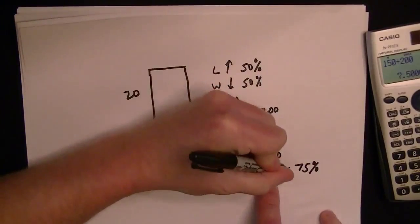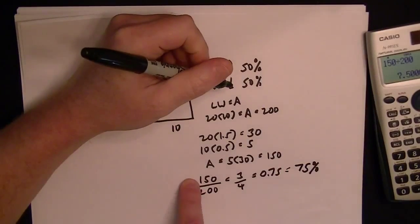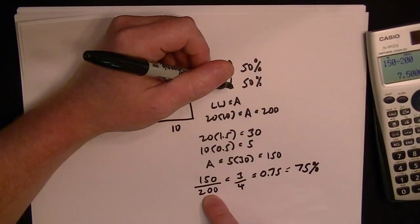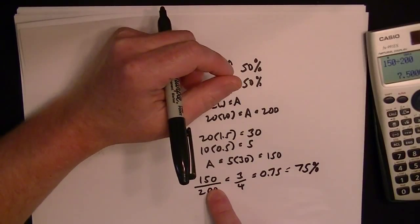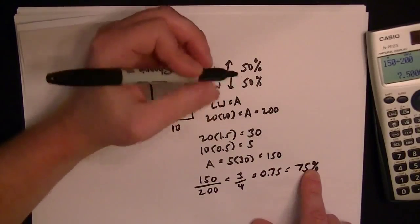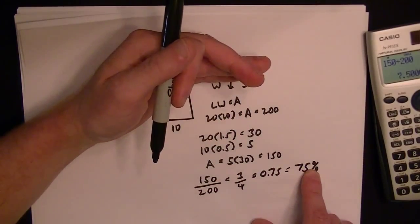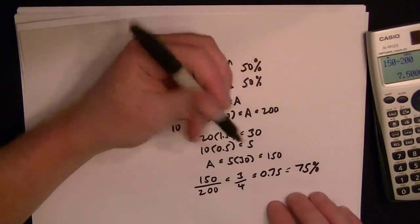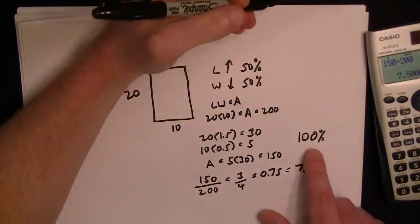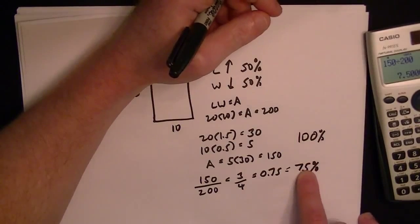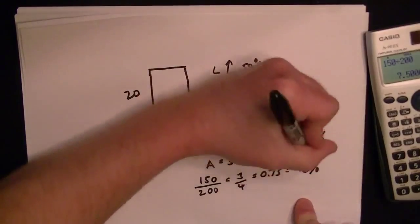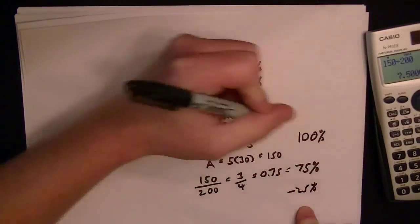This is basically saying the new garden is 75% the size of the old garden. In other words, the new garden has 25% less area than the old garden. 75% of the original size is 25% lower than the original because the original size is what we're comparing it to. It's 100%, but it dropped down to 75%, so it's a minus 25% change.